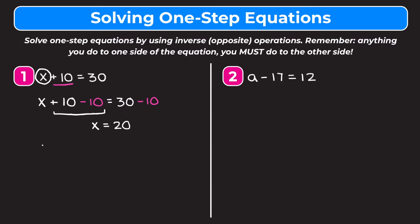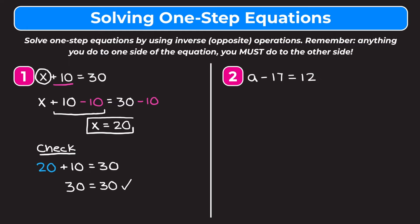To check our answer we take our original equation x plus 10 equals 30, but instead of x we plug in the answer we got. So we say 20 plus 10 equals 30, and we want to make sure both sides of the equation are equal. 20 plus 10 is 30, so we get 30 equals 30, which confirms that our answer x equals 20 is correct.